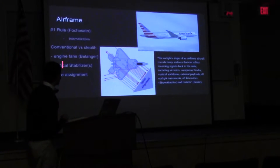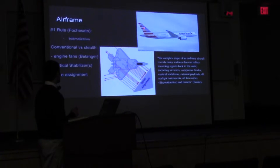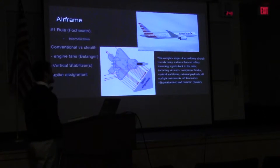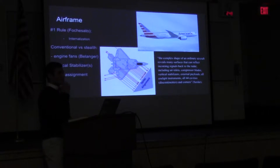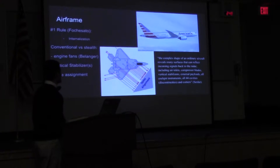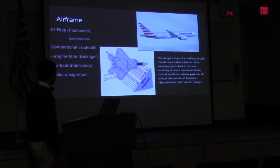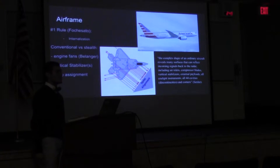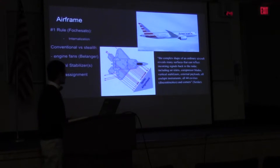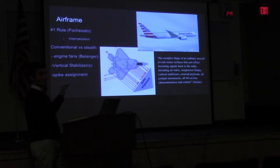Now let's talk about vertical stabilizers. The vertical stabilizer is a big surface, and it creates a 90-degree angle with the airframe. In the stealth world, 90-degree angles don't work — because a 90-degree angle will send radar right back to where it came from. So on the F-22 and in the stealth realm, those big vertical stabilizers are tilted — they're on an axis. This is done so radar can be deflected away from the aircraft instead of being sent right back to the receiver.